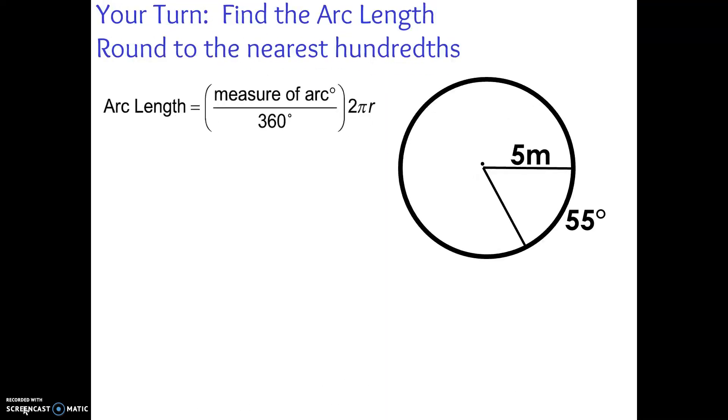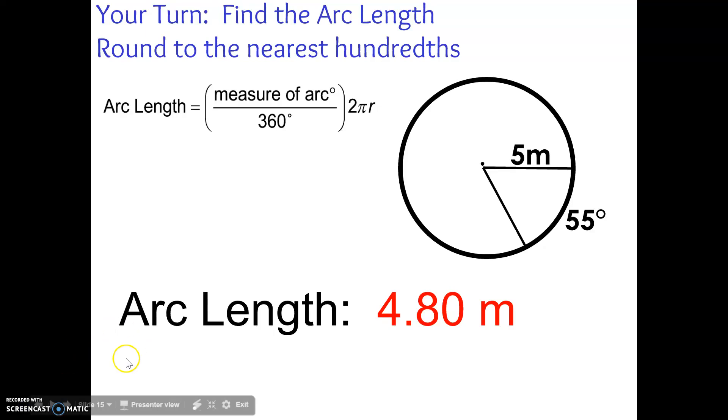Alright, your turn. Go ahead and take a moment and find out this arc length. Alright, let's check our answer here. The correct rounded to the nearest hundredths arc length is 4.80 meters. Alrighty.